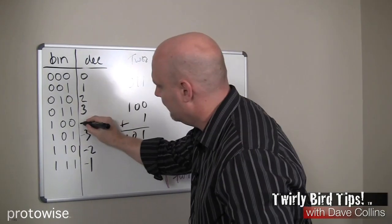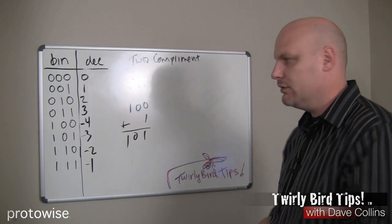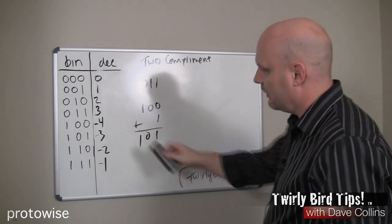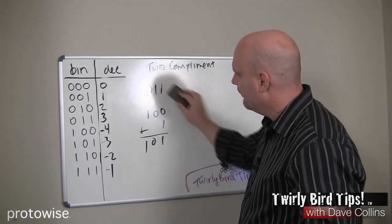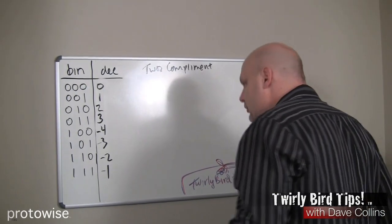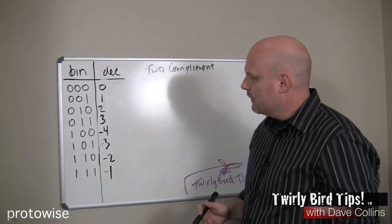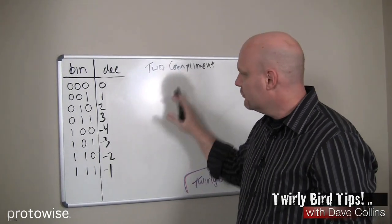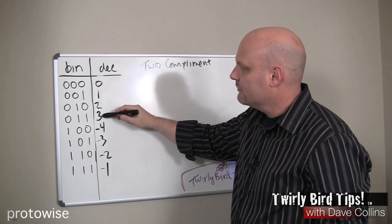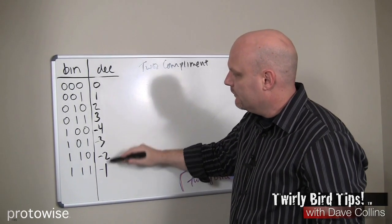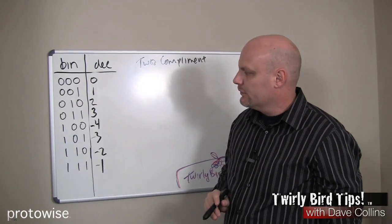And this last one is always going to be the smallest negative number in our system. In our case, it will be negative 4. And so that's two's complement. The representation of both positive and negative numbers using two's complement. Notice we go from 0 to 3 on the positive side, and from negative 1 to negative 4 on the negative side.